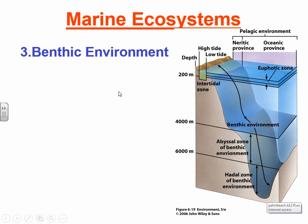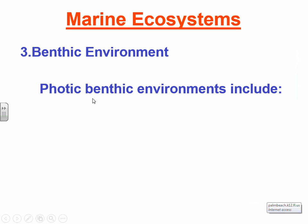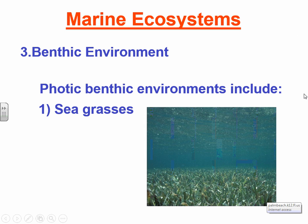The photic benthic environment — where light penetrates — features major seagrasses such as manatee grass and turtle grass in the tropics, and eel grass in temperate regions. These grasses survive in salt water but not very deep since they need light to photosynthesize. They are flowering plants that provide food for herbivores like manatees. Whatever grasses aren't consumed by herbivores are decomposed by bacteria at the bottom, and nutrients are recycled.